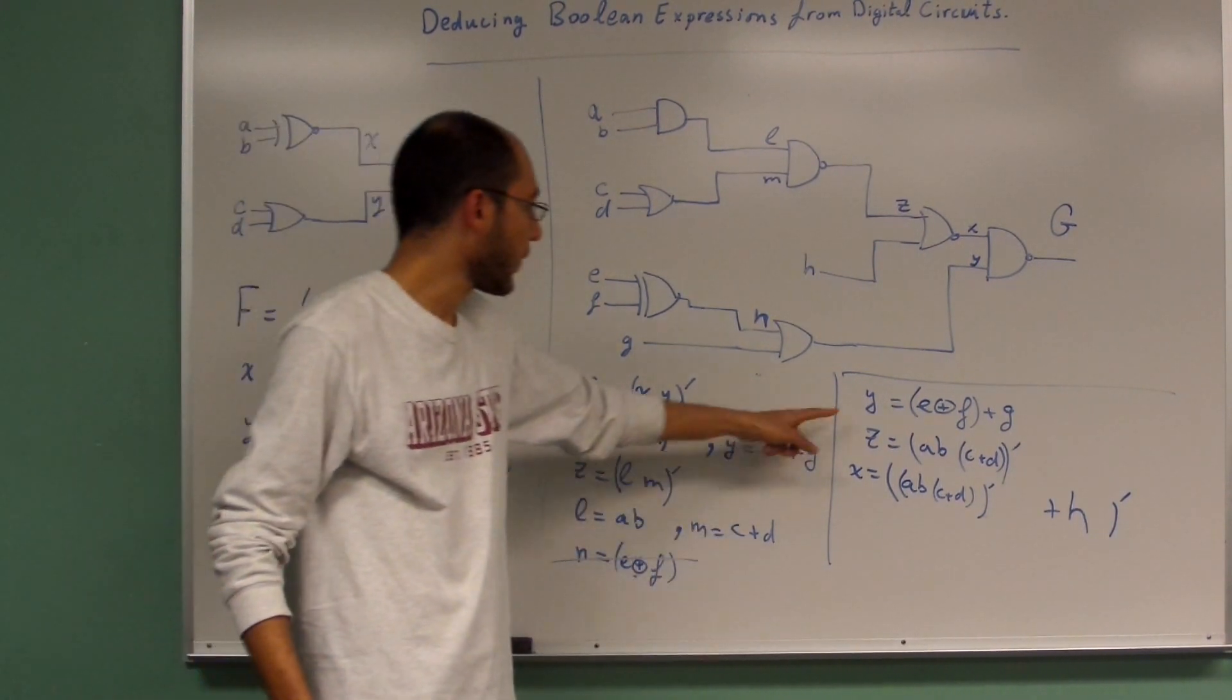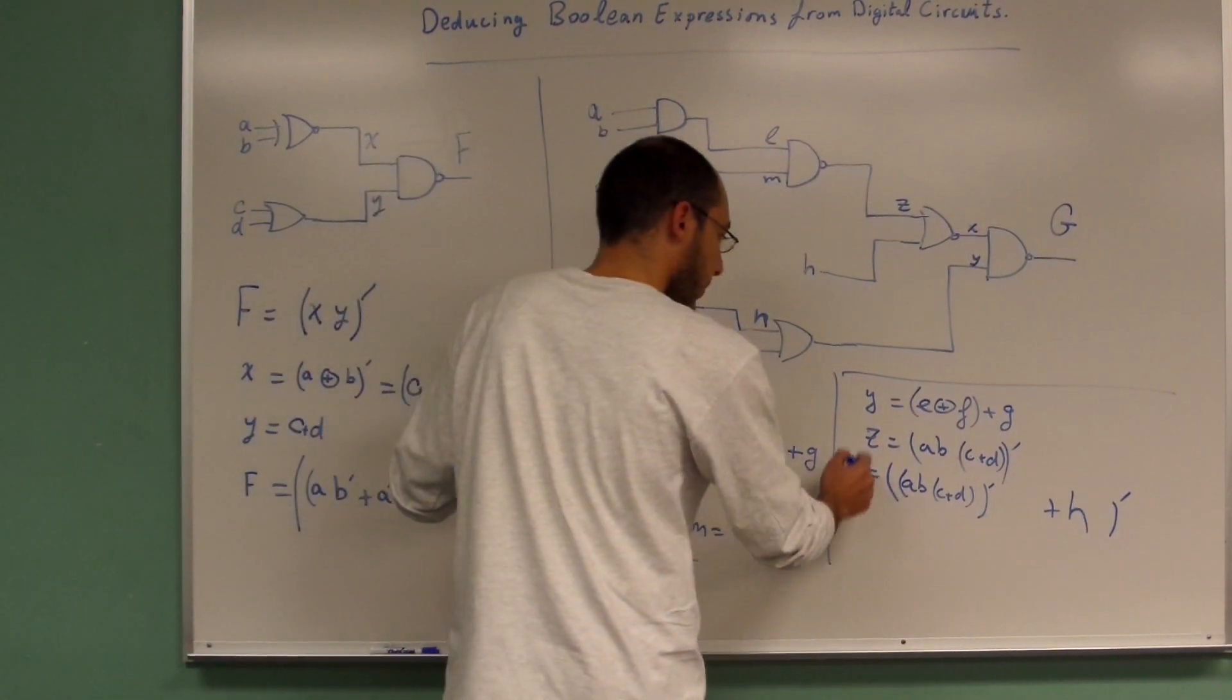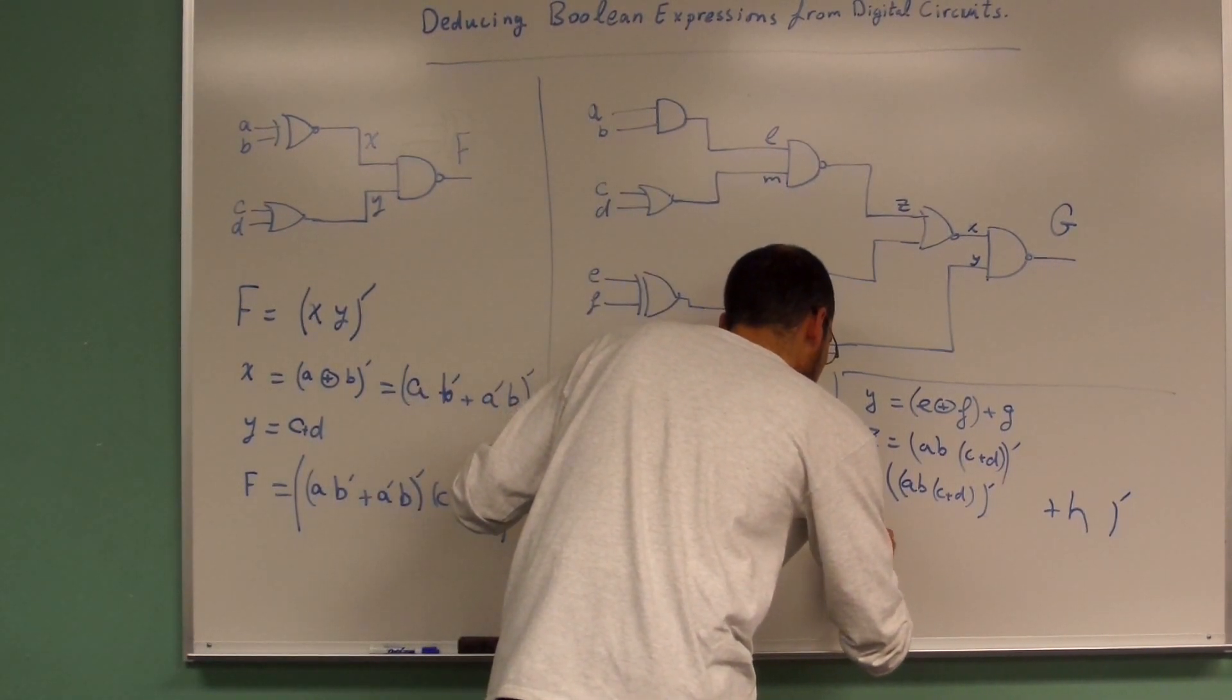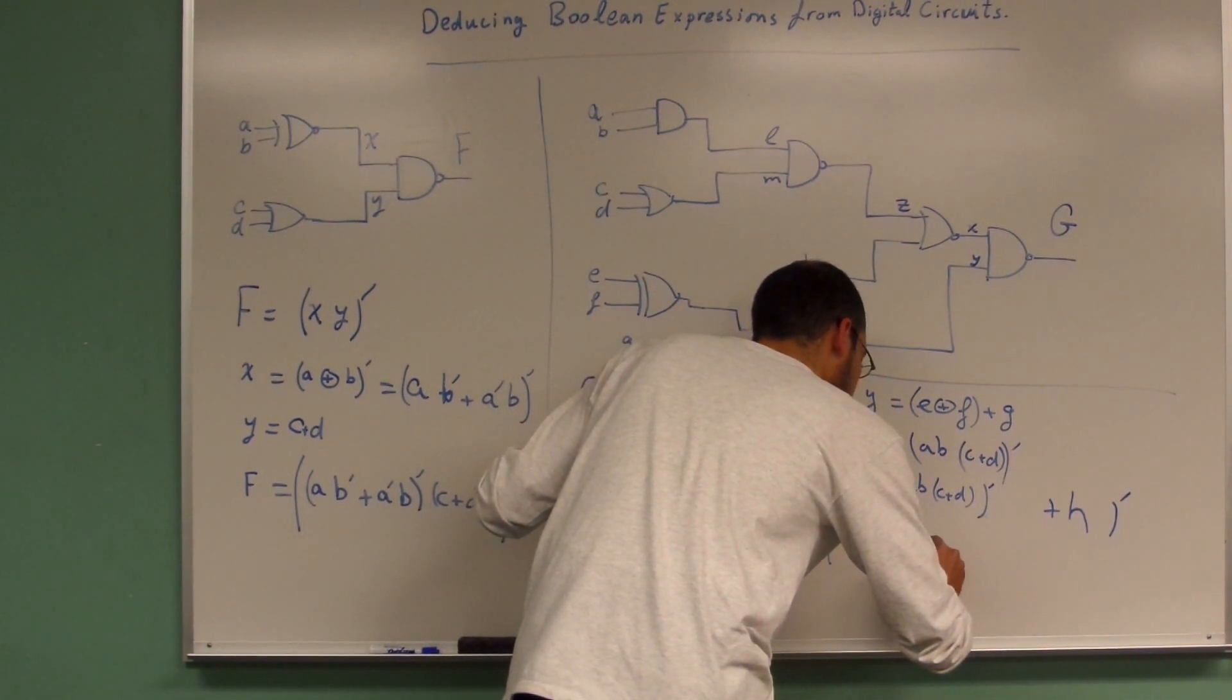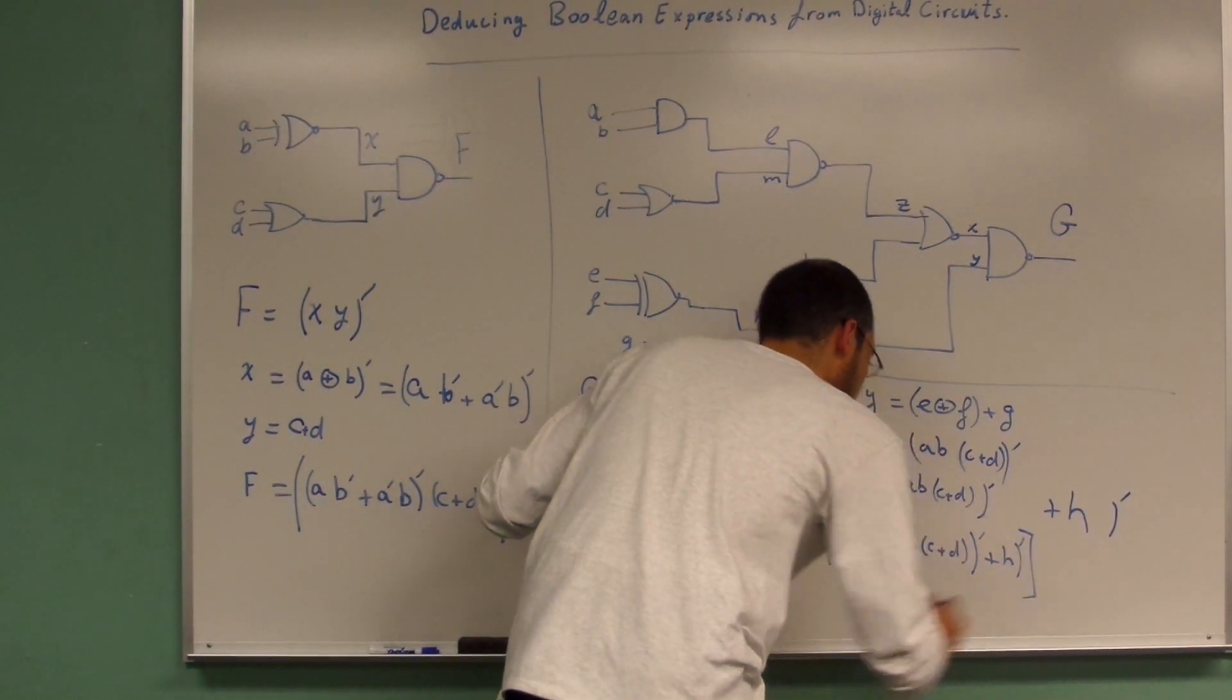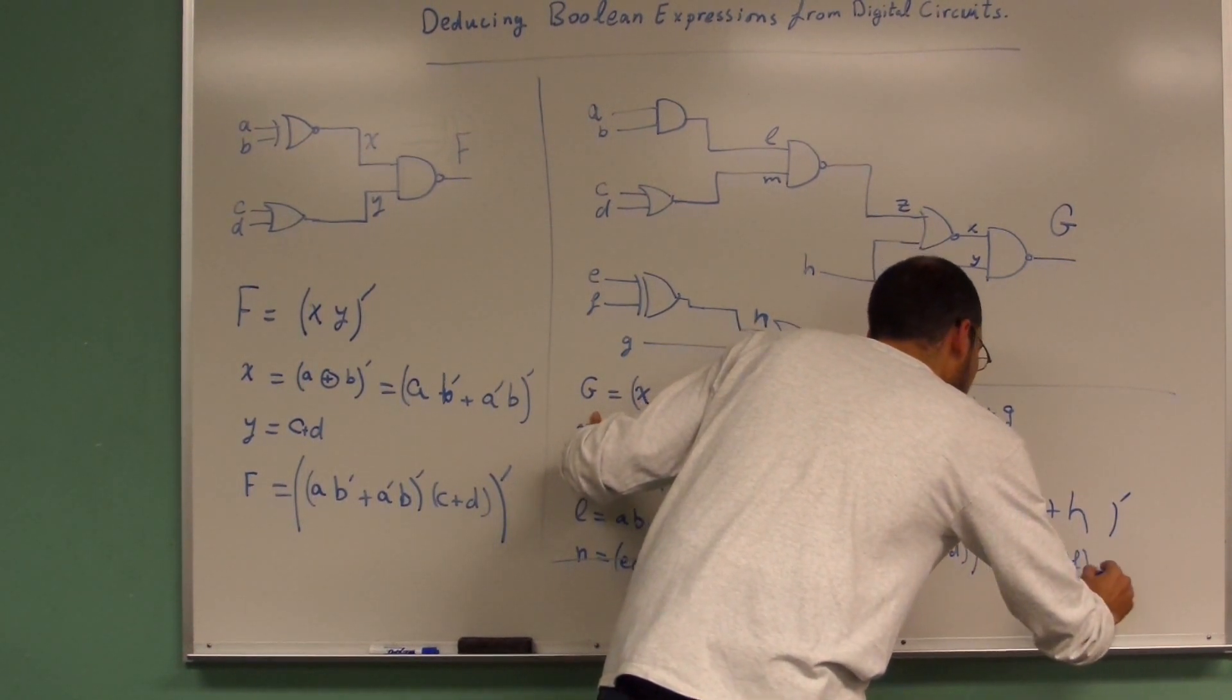Right now I have a value for Y, Z, and X. The X multiplied by Y gives G, which is Y—E XOR F—and that's the X multiplied by Y, which is E XOR F plus N.